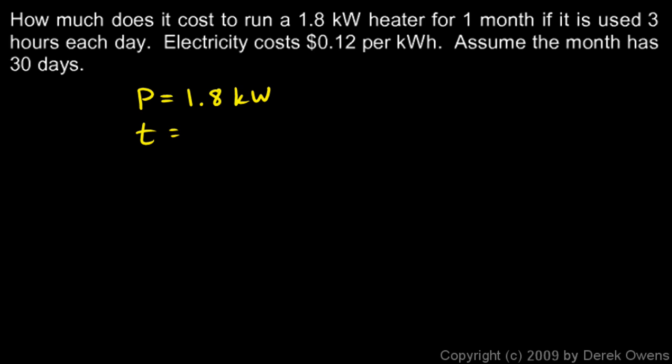And we're told the time is 30 days, and we're using it for three hours per day. And if we write it like this, you can see the days cancel out mathematically.